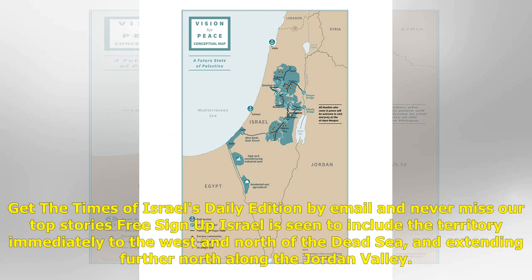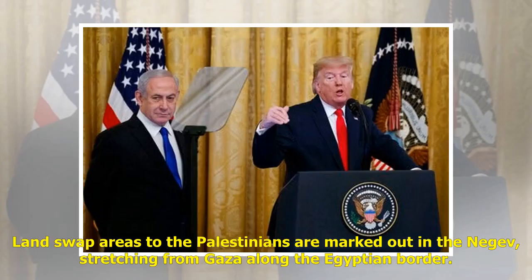Israel is seen to include the territory immediately to the west and north of the Dead Sea and extending further north along the Jordan Valley. Land swap areas to the Palestinians are marked out in the Negev, stretching from Gaza along the Egyptian border.